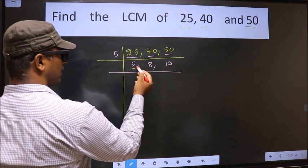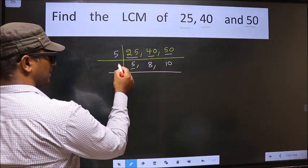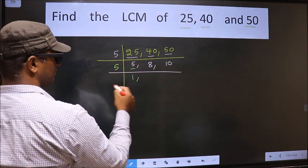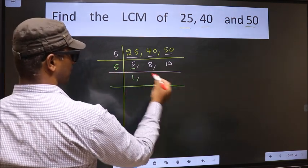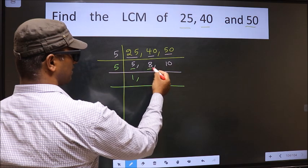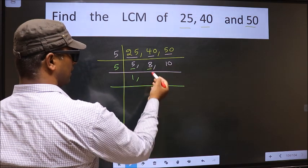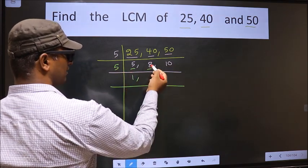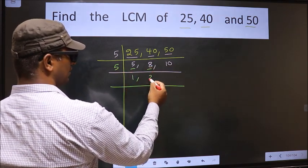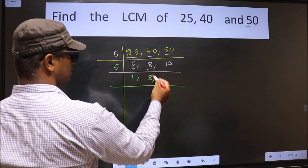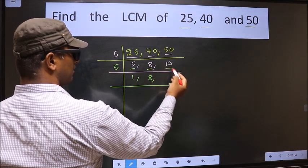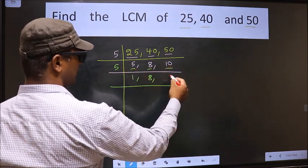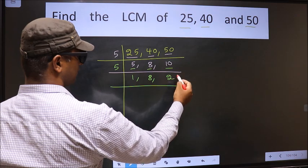Now, here we have 5. 5 is a prime number, so 5 times 1 is 5. The other number 8 is not divisible by 5, so we write it down as it is. The other number 10 — when do we get 10 in the 5 table? 5 times 2 is 10.